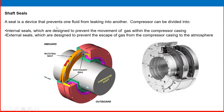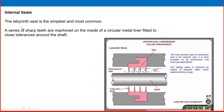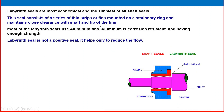Shaft seals: a seal is a device to prevent one fluid from leaking into another. Compressor seals are divided into internal seals, designed to prevent movement of gas within the compressor casing, and external seals, designed to prevent the escape of gas from the casing to atmosphere. The labyrinth seal is the simplest and most common internal seal — a series of sharp teeth are machined on the inside of a circular metal liner fitted with close tolerances around the shaft. Labyrinth seals consist of thin strips or fins mounted on a stationary ring, maintaining close clearance with the shaft. Most labyrinth seal fins are made of aluminum, which is corrosion-resistant and has sufficient strength. The labyrinth seal is not a positive seal; it helps to reduce the flow.